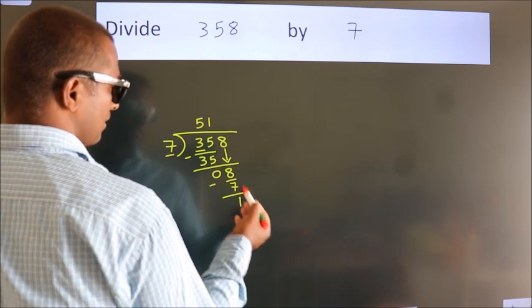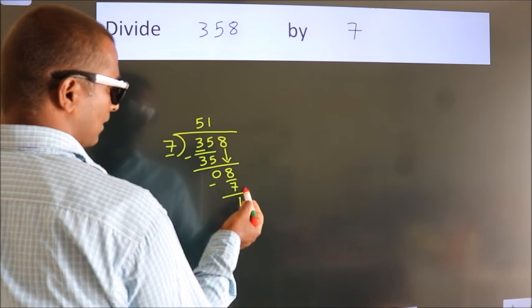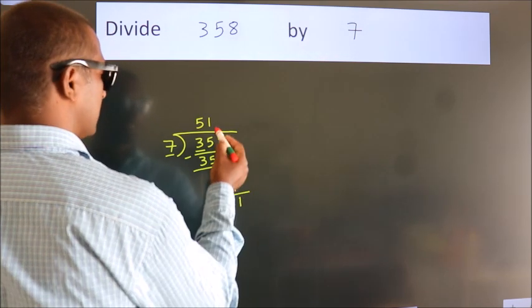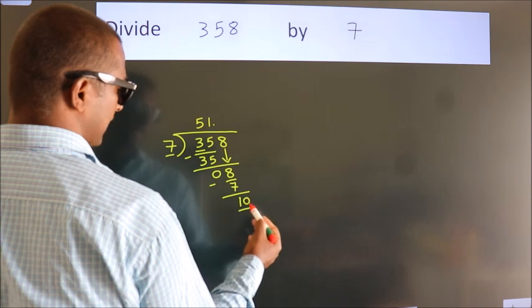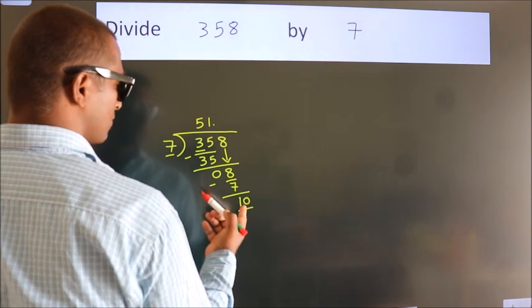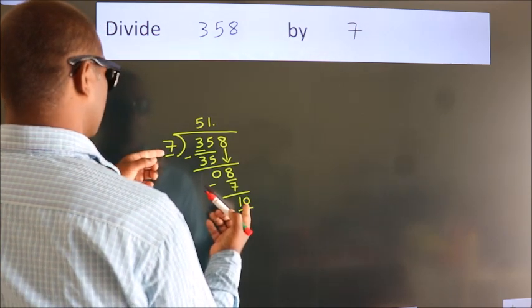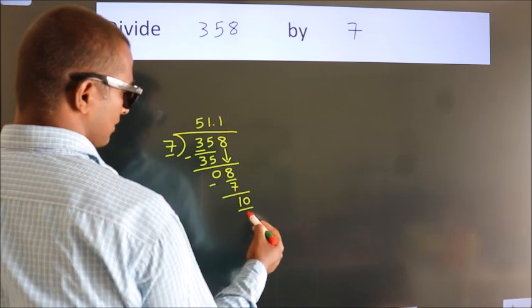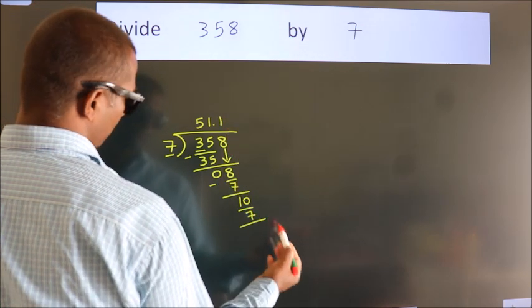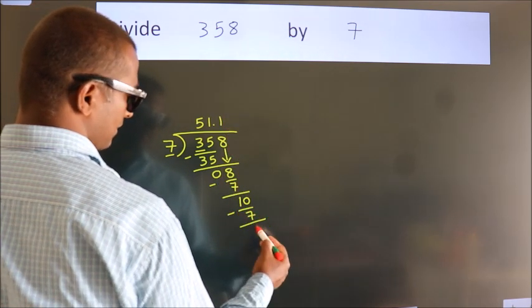After this, no more numbers to bring it down. So what we do is, we put dot take 0. So 10. A number close to 10 in 7 table is 7 ones, 7. Now we subtract. We get 3.